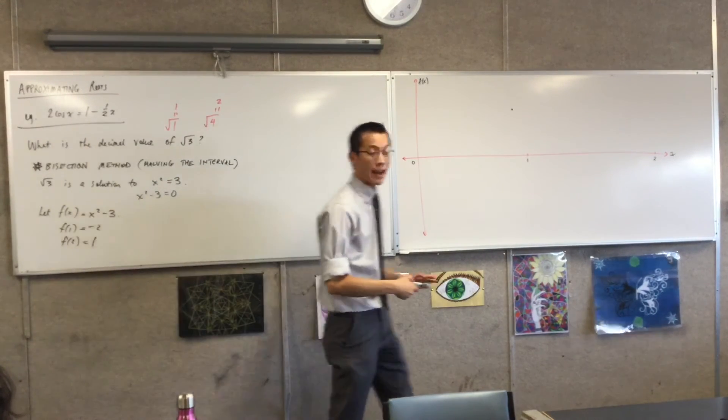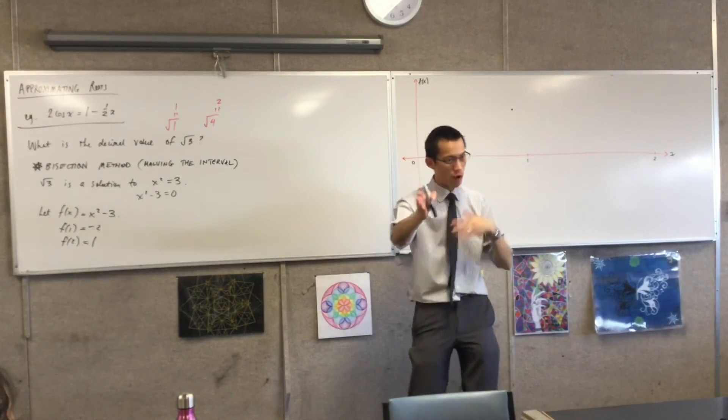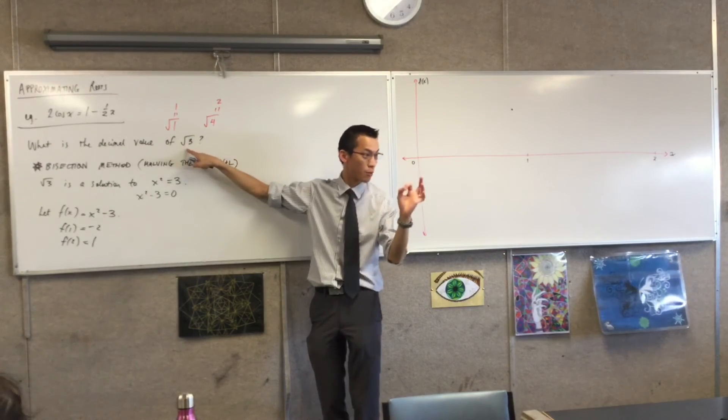Do you see there's a change in sign, right? I have to change sign between 1 and 2, or rather from 1 to 2, because I know somewhere in the middle, I'm going to hit 0, okay?